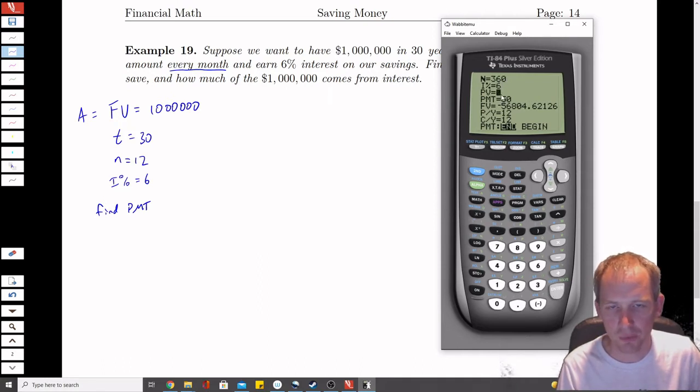There is no mention of starting with a balance. We're just putting in money every month. That's what we want to do. So we start with zero, and then we have payments. Since we're finding the payments, we're going to come back to that later.